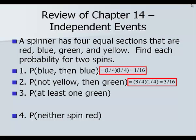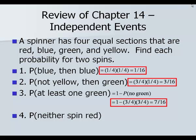The probability of at least one green — remember, for 'at least' we go backwards. We do one minus the opposite of this situation. The opposite would be no greens. So one minus three-fourths times three-fourths, which would be one minus nine-sixteenths. Seven-sixteenths is our final answer. The probability of neither spin being red is three-fourths times three-fourths, that's nine-sixteenths.